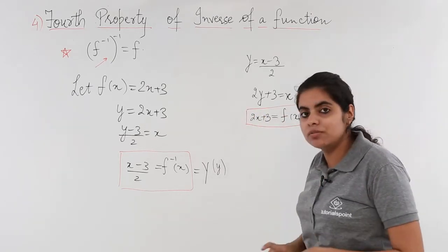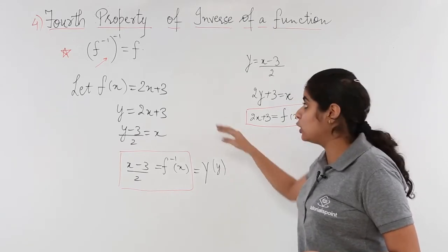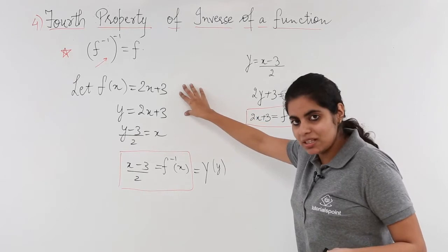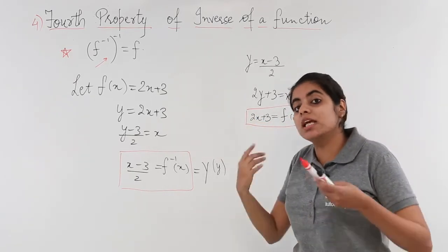2x + 3 is the function value we got now, and it was actually the function value with which we started. That means we have got the same function again.